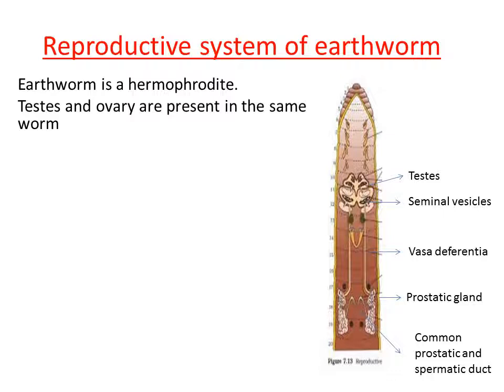Let us focus on the male reproductive system of the earthworm. In the diagram I have labeled the organs present in the male reproductive system. It consists of testes, seminal vesicle, vasa differentia, prostatic gland, and common prostatic and spermatic duct. The main function of the male reproductive system is to produce male gametes.